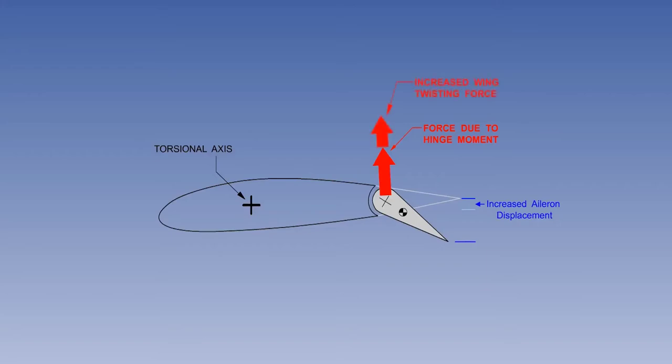The increased deflection of the aileron will give an increased twisting force to the wing. This set of actions will repeat.